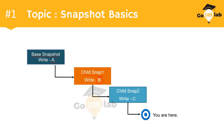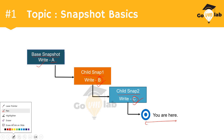We are not going into the depth of how snapshots work here — that's a different topic — but we are trying to understand the exact outcome of these scenario-based questions. In child snap one, the user wrote value B. Then the user took another snapshot named snap two and wrote data value C. So in this scenario, the user has taken three different snapshots: the first snapshot has data A, the second has data B, the third has data C, and the user is currently presented at this particular state.